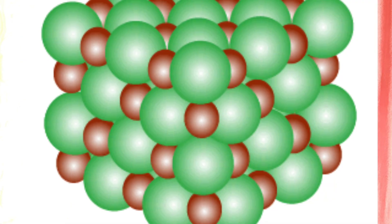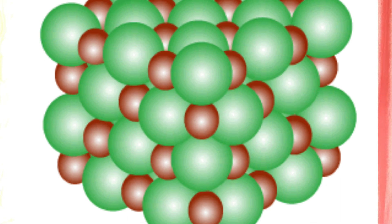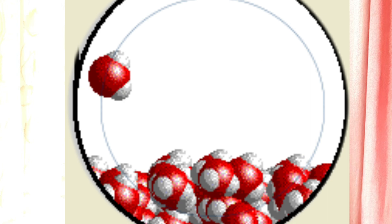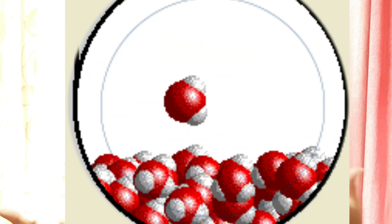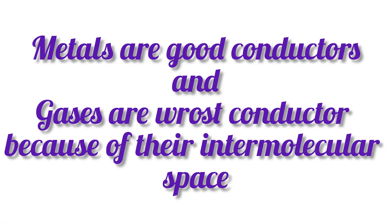For conduction, the molecules are closer to each other, so they will transfer thermal energy very quickly. In convection, there is an intermolecular space between the molecules, so the transfer of thermal energy will take more time. But in gases, there are lots of gaps and molecules are randomly moving. So there is a big gap in the transfer of thermal energy. Based on this, we can say which is the best conductor and which is the worst — that is why metals are the best conductors and gases are the worst conductors.